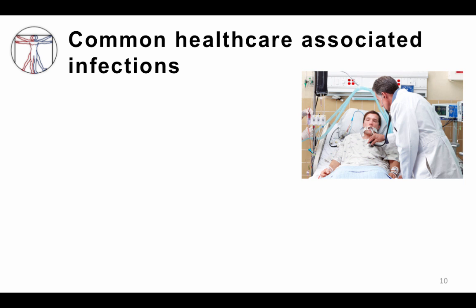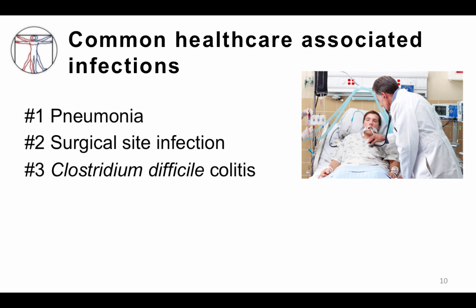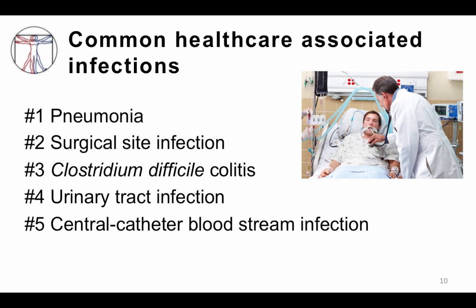The key healthcare-associated infections we worry about are pneumonia — often ventilator-associated, though non-ventilated hospitalized patients still get pneumonia — surgical site infections, Clostridium difficile colitis, urinary tract infections, and central catheter bloodstream infections. Let's go through these in a little more detail.